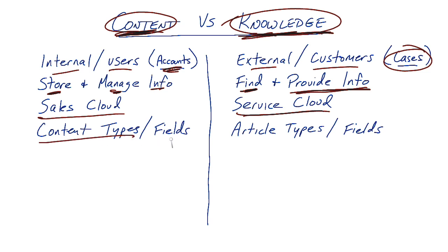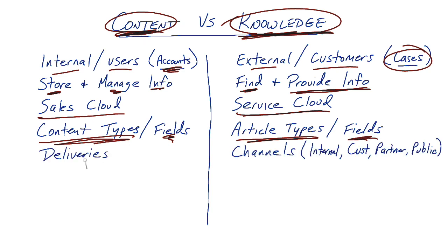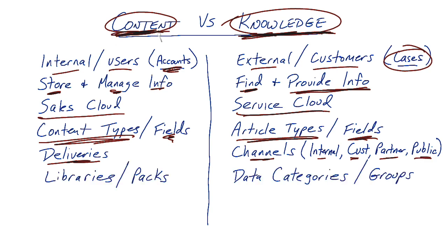When you think about content, think about creating information and delivering it to customers. When you think about knowledge, think about the different channels by which customers access that information — the customer portal, partner portal, or the public knowledge base. When you think about content, you create libraries and packs and then deliver them to customers or coworkers. When you think of knowledge, you break all that knowledge down into categories and groups so that they're easy to find.